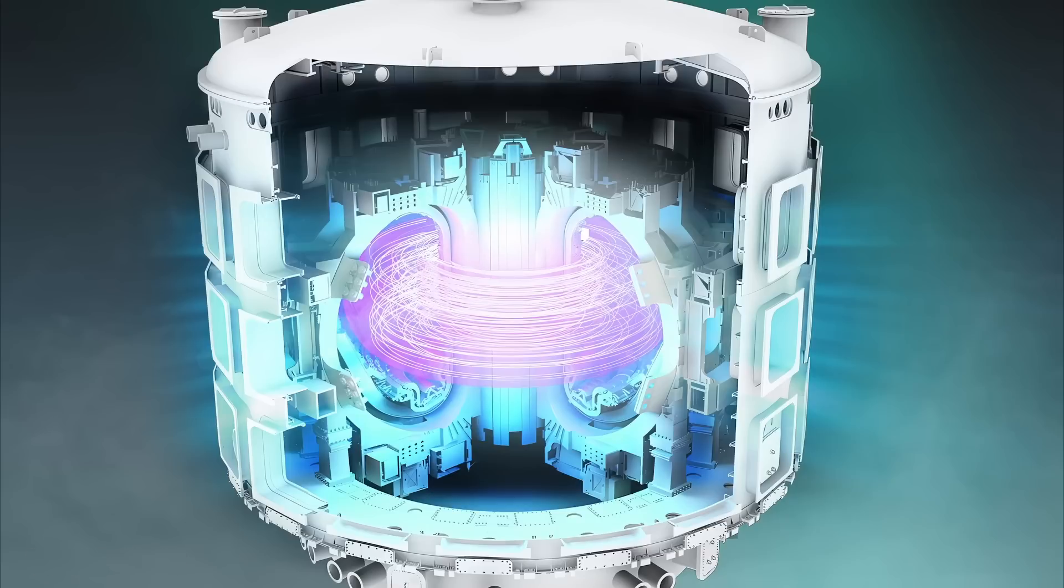In tokamaks, the plasma environment is highly dynamic, with fluctuating densities, temperatures, and magnetic fields. These variations affect the distribution of particle velocities and, in turn, the tunneling probabilities.